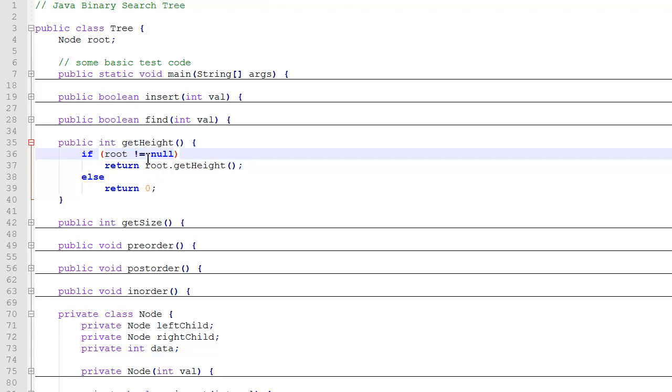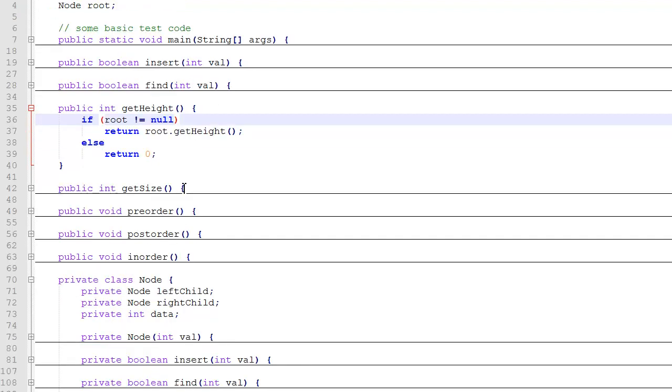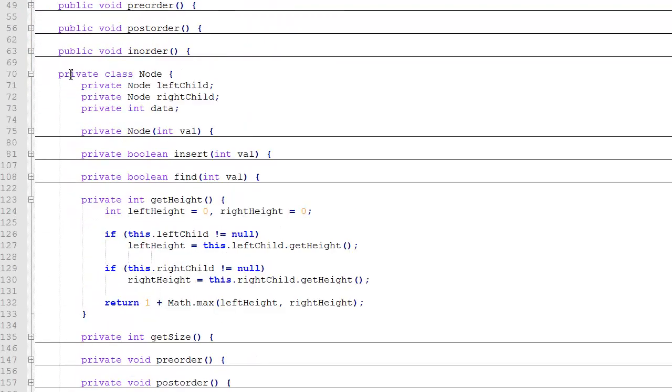So let's scroll down and take a look at the node class getHeight function. Here you can see we have a private inner node class and we have a private getHeight method that is only called by the tree's getHeight function.